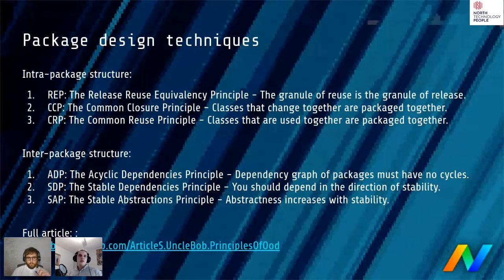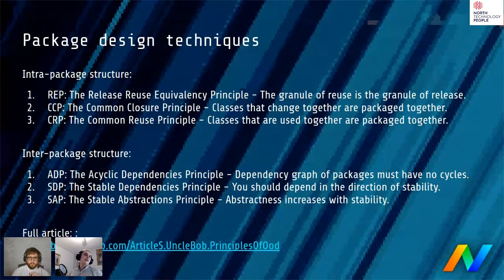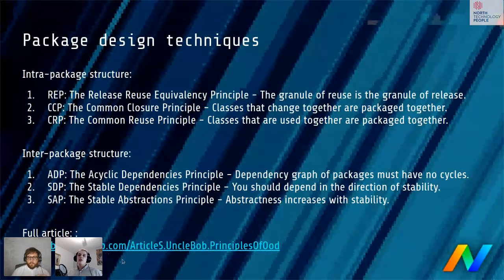The Stable Abstractions Principle says abstractness increases with stability. Your MoneyAmount class will naturally spawn implementations like CanadianMoneyAmount and USDMoneyAmount over time — different implementations emerge naturally if the code is done right, rather than everywhere using if-conditions for currency rate changes. There's a very interesting article by Uncle Bob on uncle-bob.com in the old articles section titled 'The Principles of Object-Oriented Design.'